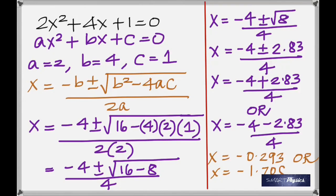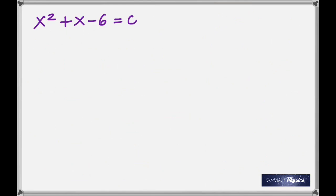All right, look at this equation: x² + x - 6 = 0. Compare it with ax² + bx + c = 0. You see that a is 1, b is also 1, and c is -6.